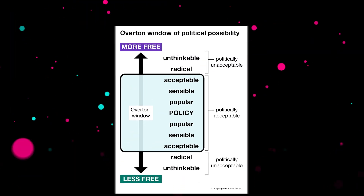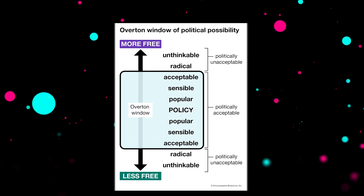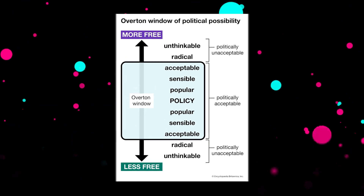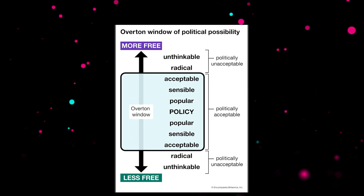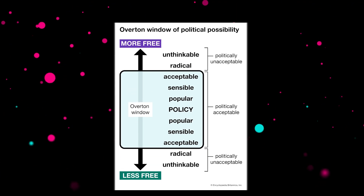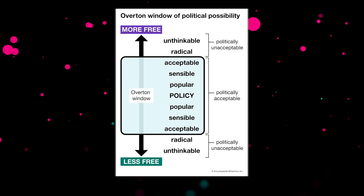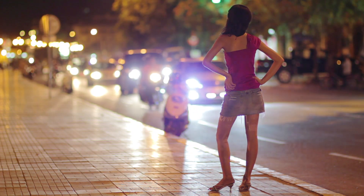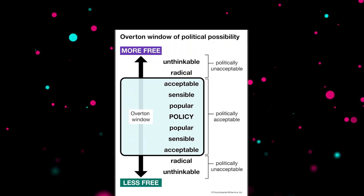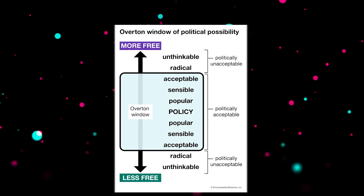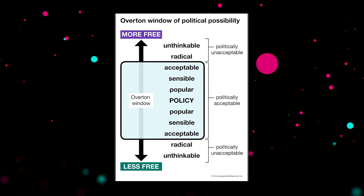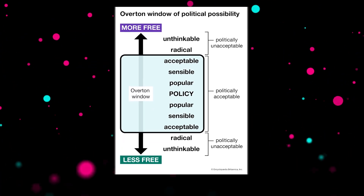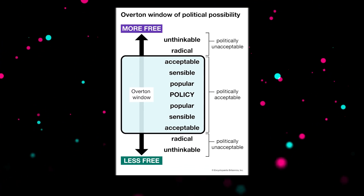Above and below popular, you get sensible ideas. This could include proposals that are based on rational arguments, even though they make some people uncomfortable, such as decriminalizing payments for pleasure. As you move away from the Overton Window, you move on to what is deemed acceptable, but still rather unpopular and far away from policy implementation.